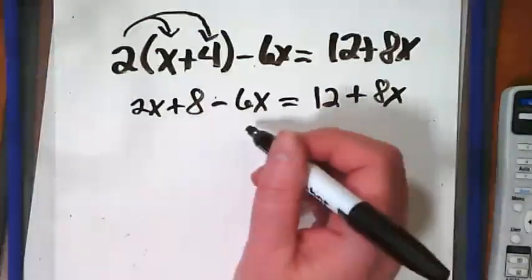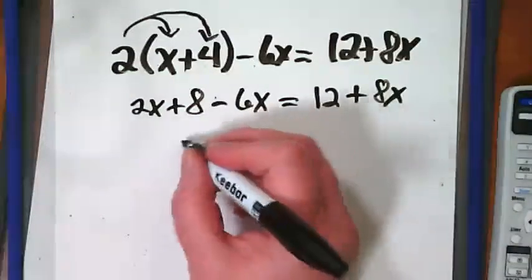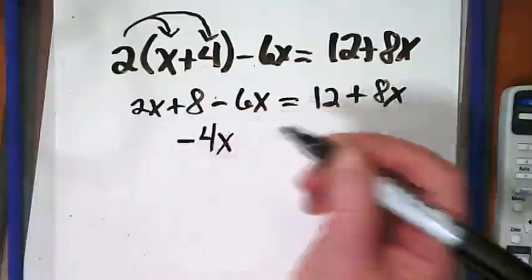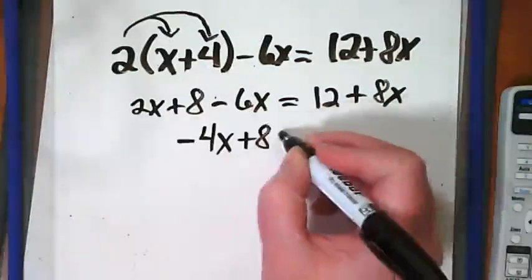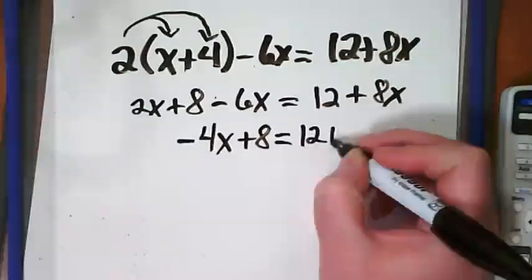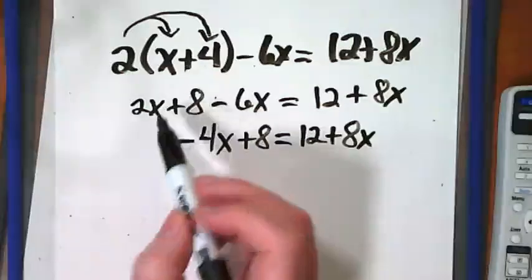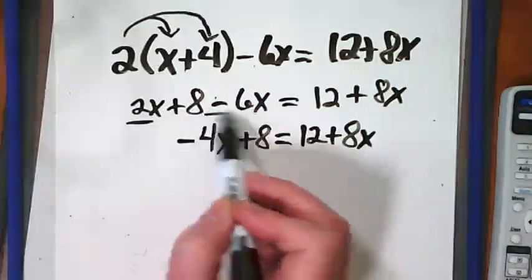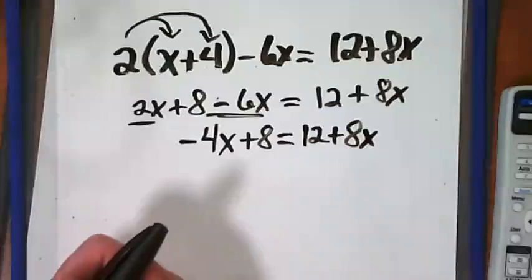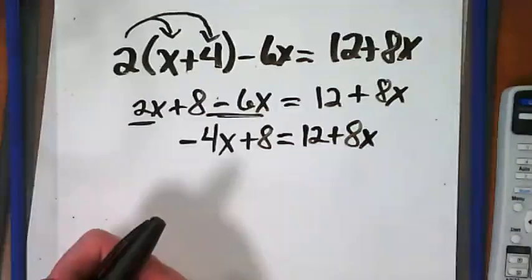So 2x minus 6x gives us negative 4x plus 8 equals 12 plus 8x. The only thing I've done here is took these two terms and put them together. Everything else just got moved to the next line. With me? Okay.